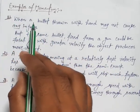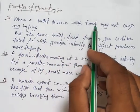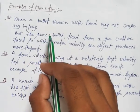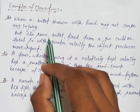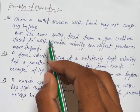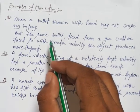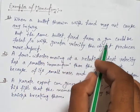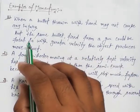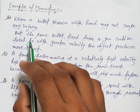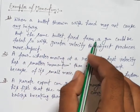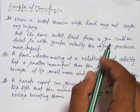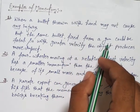The first example is: when a bullet thrown with a hand may not cause any injury. अगर हम किसी bullet को, किसी particular mass के bullet को by hand throw करते हैं, तब उससे इतना ज्यादा injured नहीं होता है. But the same bullet fired from a gun could be fatal — ये एक बहुत ज्यादा नुकसानदायक हो सकता है.